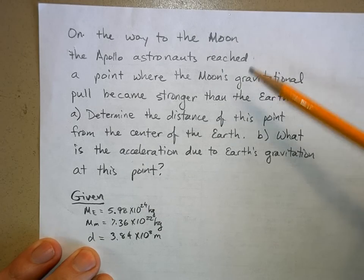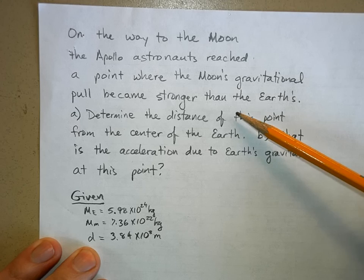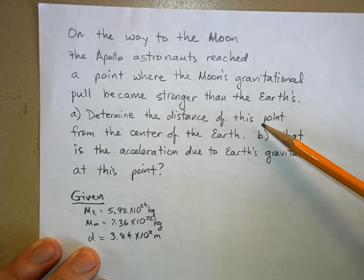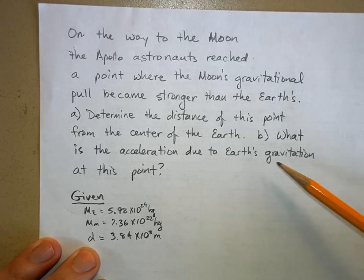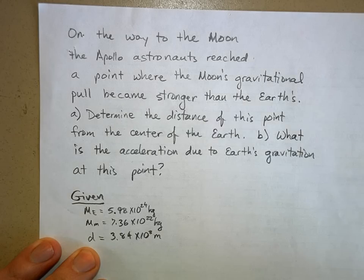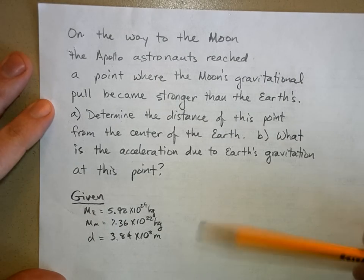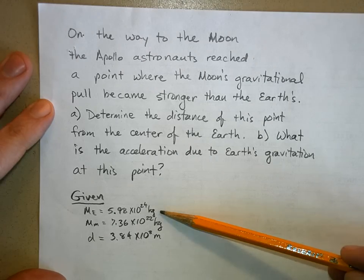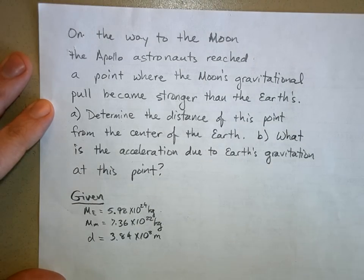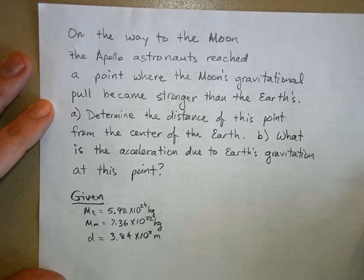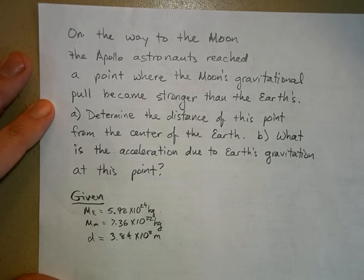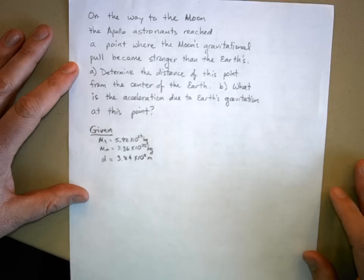On the way to the moon, the Apollo astronauts reached a point where the moon's gravitational pull became stronger than the earth's. Determine the distance of this point from the center of the earth, and what is the acceleration due to earth's gravitation at this point. You need to know the mass of the earth, the mass of the moon, and the distance between the earth and the moon — measured from center to center, so you don't need to worry about the radii.